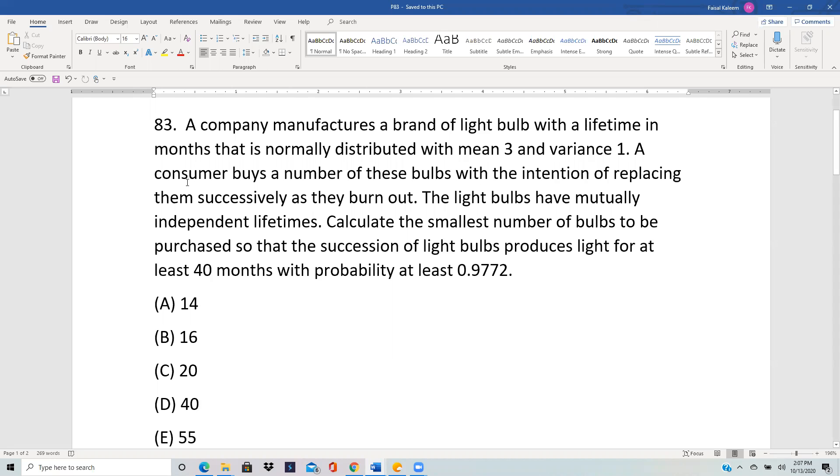A consumer buys a number of these bulbs with the intention of replacing them successfully as they burn out. The light bulbs have mutually independent lifetimes. Calculate the smallest number of bulbs to be purchased so that the succession of light bulbs produces light for at least 40 months with probability at least 0.9772.